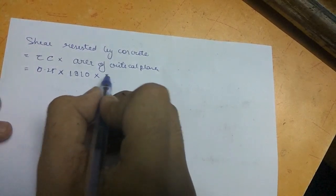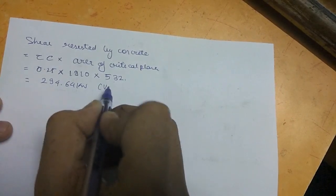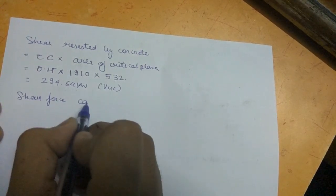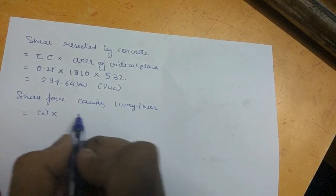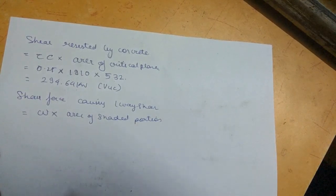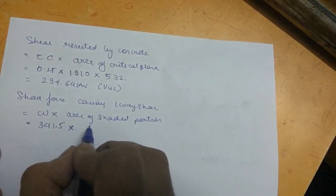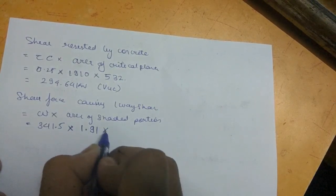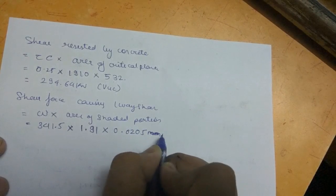The area of the critical plane in the Y direction is the perimeter 1910 mm multiplied by the effective depth 532 mm. The shear force resisted by concrete is τc × area of critical plane = 294.64 kN. Call this VUC. The shear force causing one-way shear is W × area of shaded portion: 341.5 × 1.91 × 0.0205 = 13.37 kN. Call this VUD.